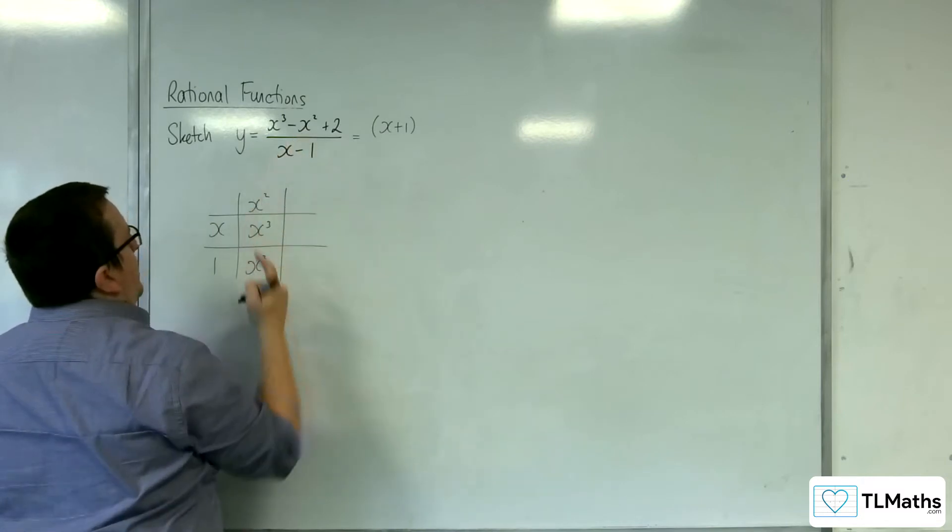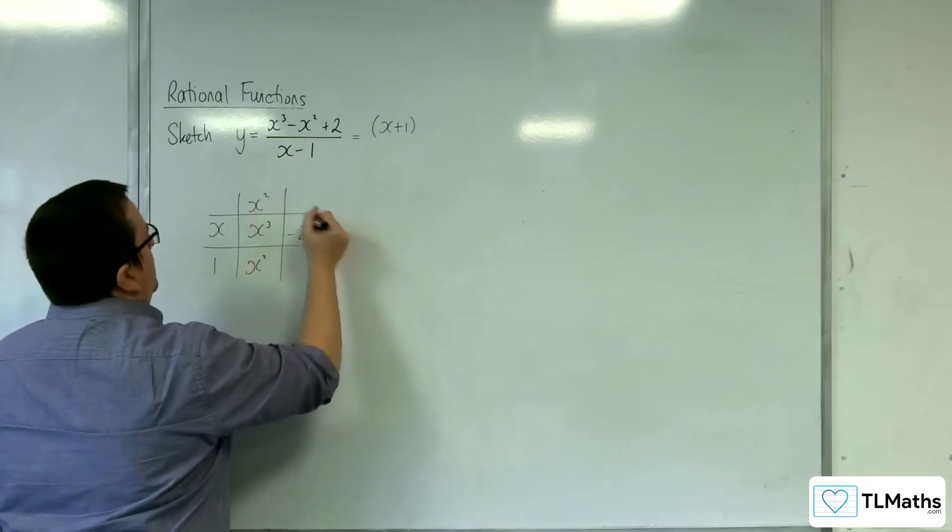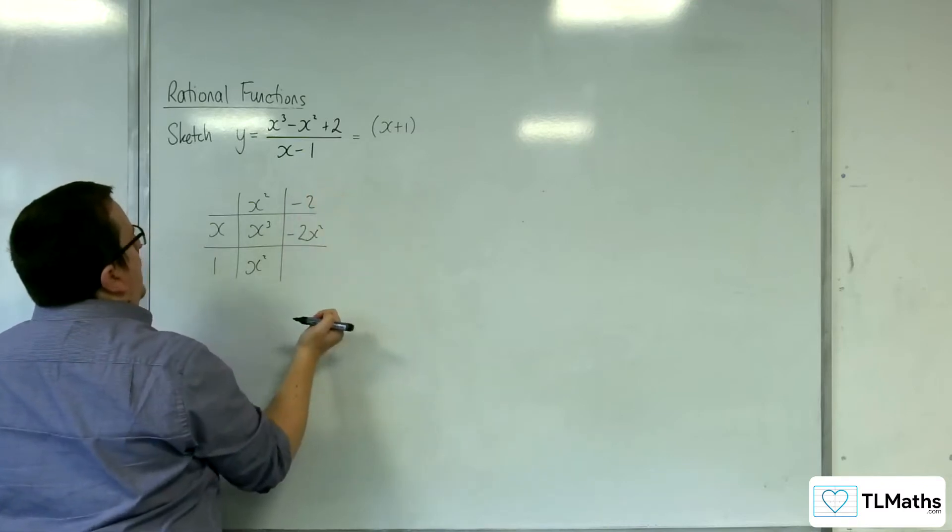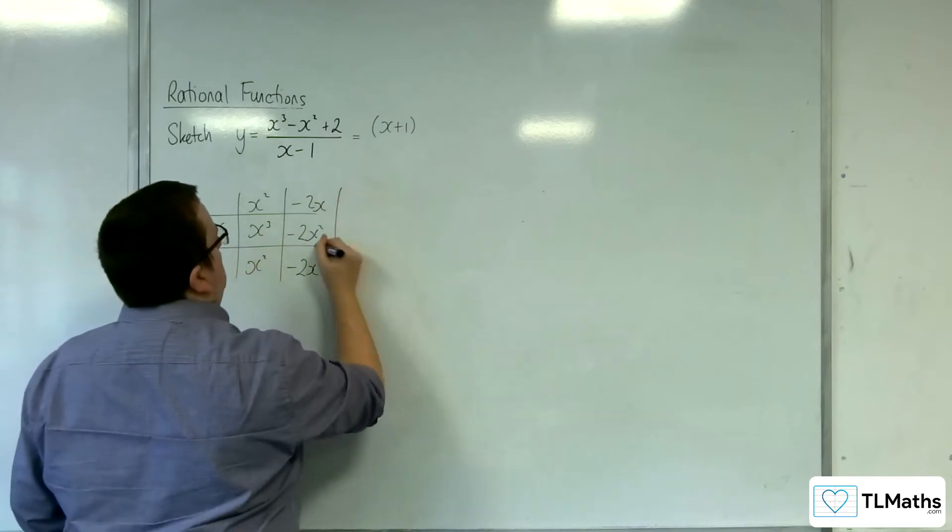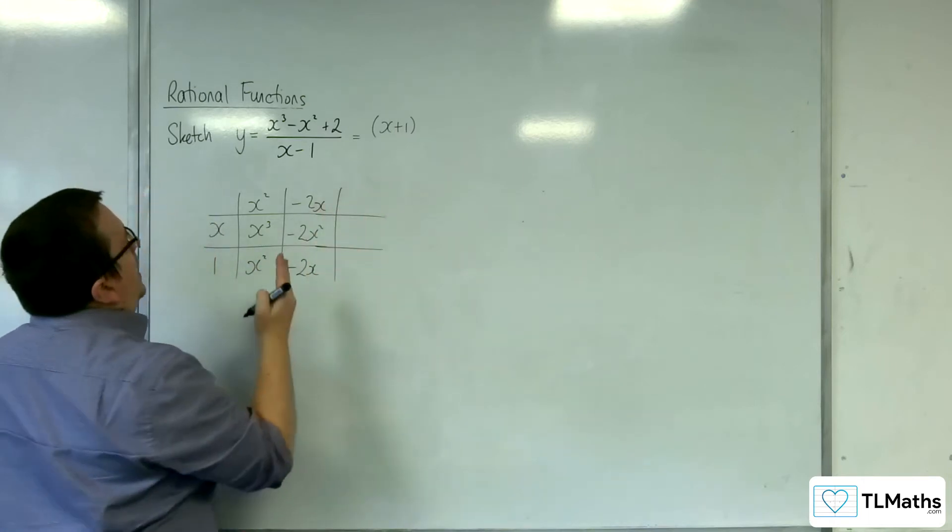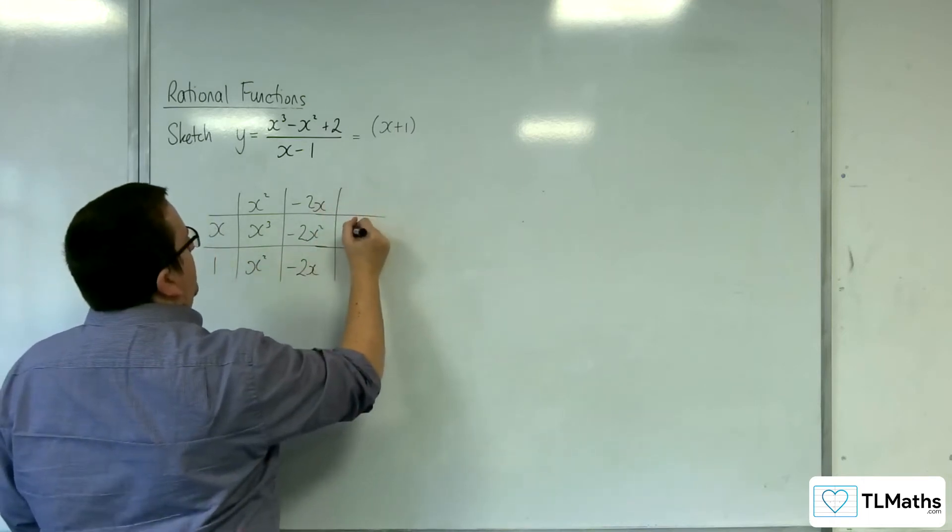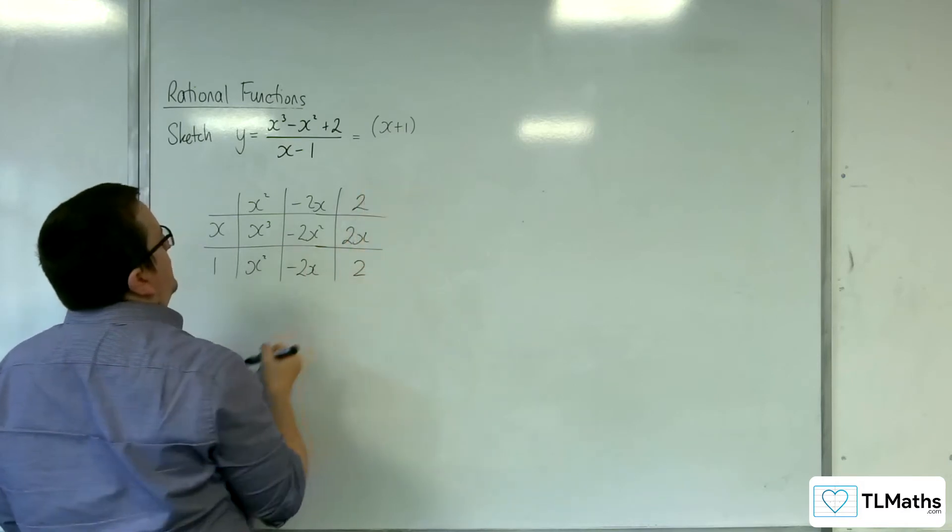So I've got x squared, I need minus x squared, I'm going to take away 2x squared. That's going to be minus 2x and then minus 2x times 1. We need 0x, so that's going to have to be 2x, so that's going to have to be 2, that'll give me the 2.